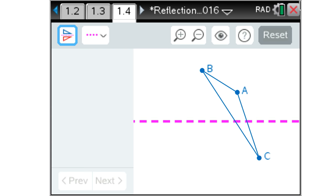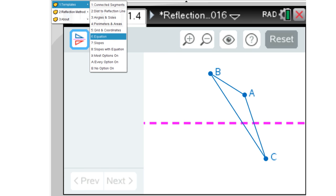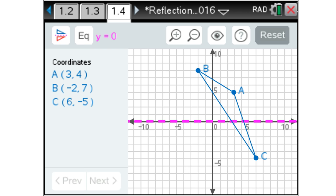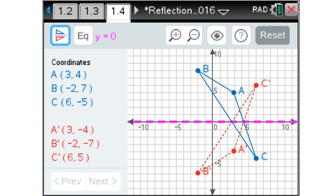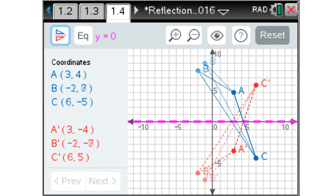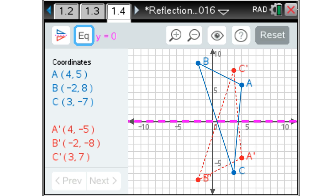We have created several templates so that students can quickly set up the activity and then spend their valuable time exploring. Here we are investigating the relationship among coordinates when reflecting a triangle about different lines. Here we can look for patterns, change the triangles, and notice we can reflect about really any linear equation.